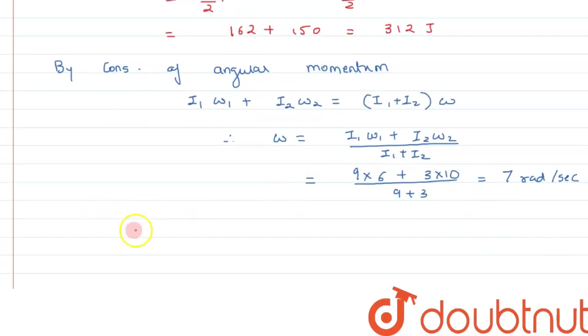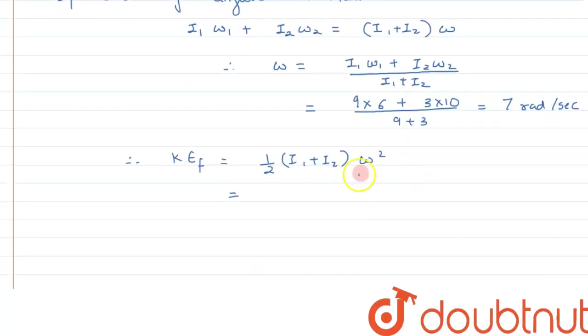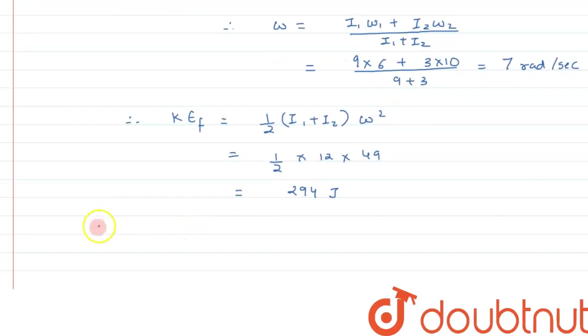Therefore we can calculate the kinetic energy final, that is ½(I₁ + I₂)ω² as both discs are moving with common angular velocity. We substitute its value: I₁ plus I₂ is 12 into ω we calculated as 7, so 49. This value comes out to be 294 joules.